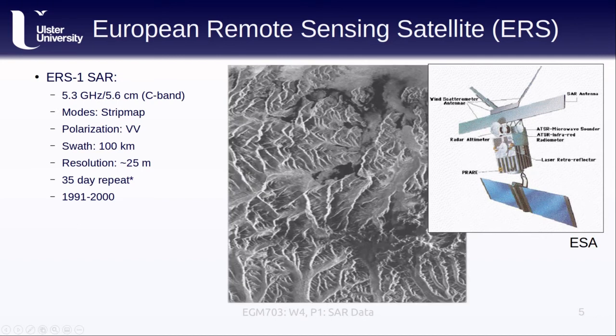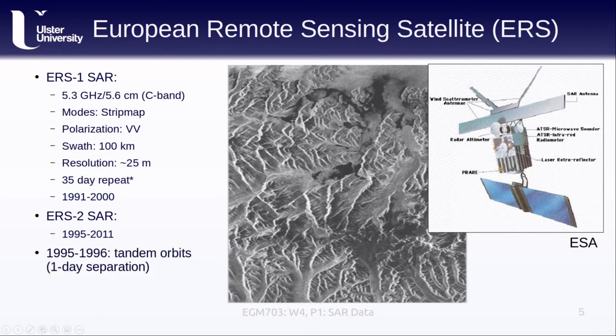ERS-1 overlapped for quite a while with ERS-2, which was an identical satellite with identical sensors. ERS-2 operated from 1995 to 2011, and from 1995 to 1996, it operated in a tandem mode with ERS-1, meaning that it was acquiring images with one-day separation using a technique that we'll cover later this week. This means that we can use these images for interferometry. ERS data are all available online from ESA, the European Space Agency, for free from the link here. All you need to do is create a free account, and using your NASA EarthData account, if you have one of those, you can also get a subset of ERS data, also for free, from the Alaska Satellite Facility.